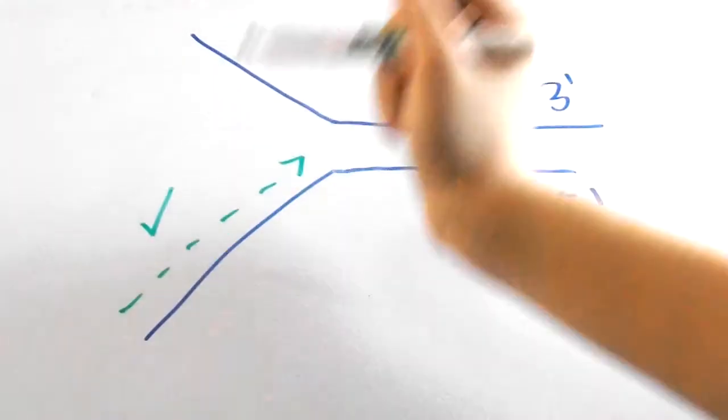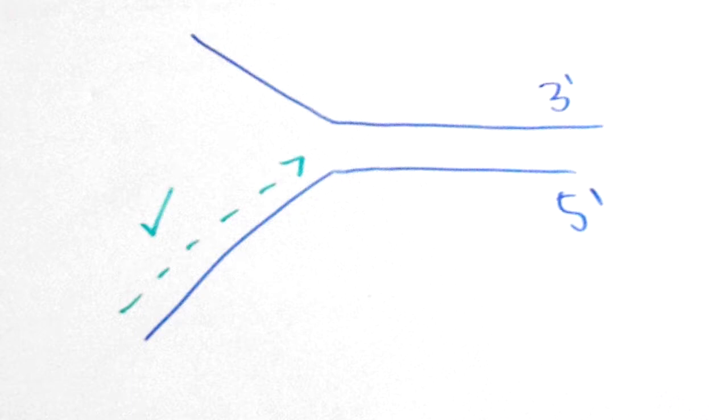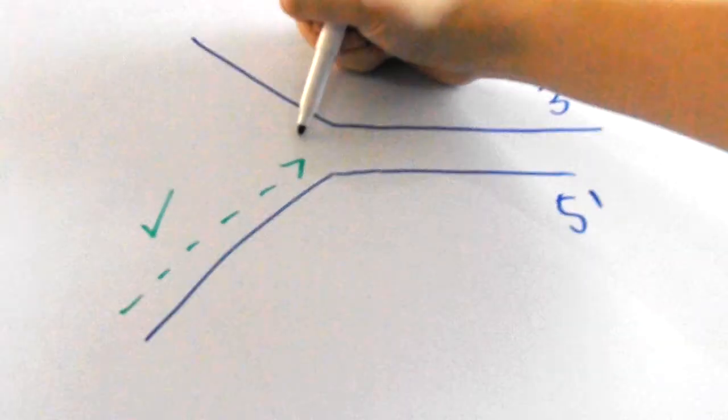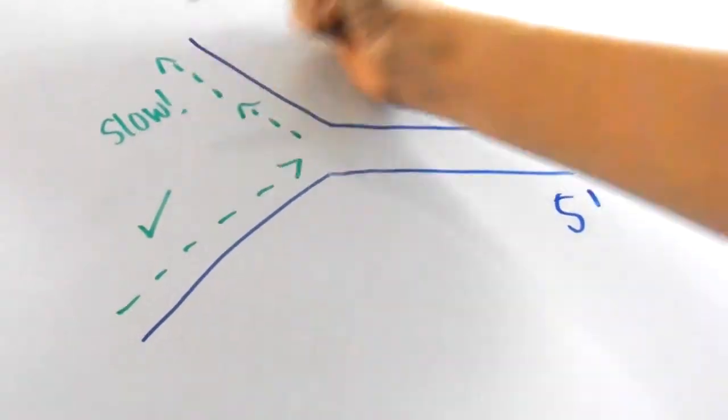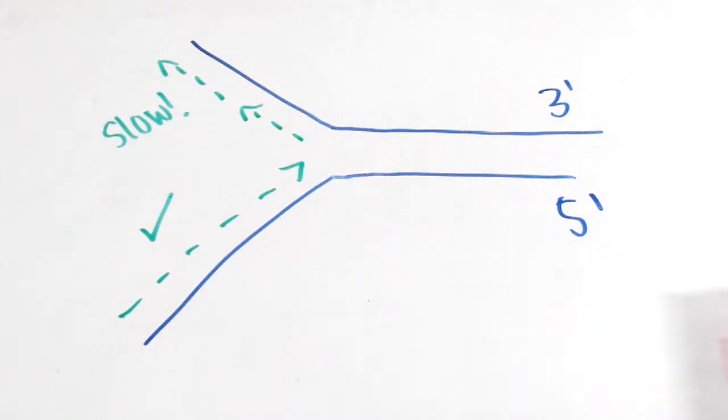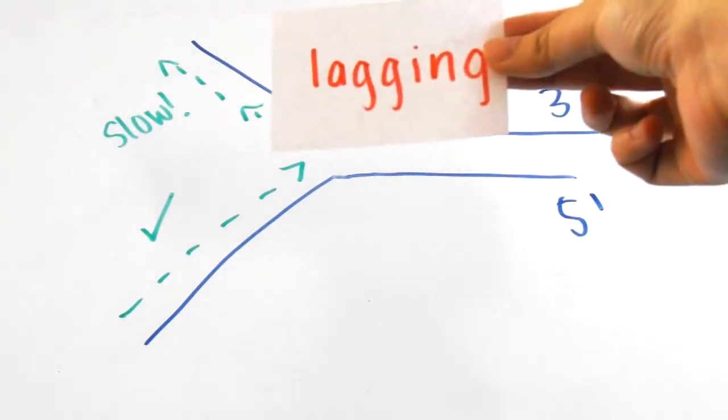DNA replication along one strand is fine since it moves in the right direction, but DNA replication in the other strand is clearly slower. The strand that moves in the right direction towards the replication fork is called the leading strand. The other one, of course, is called the lagging strand.